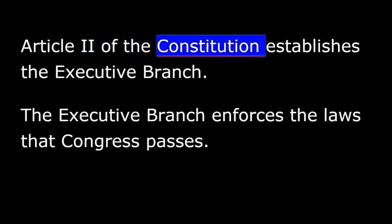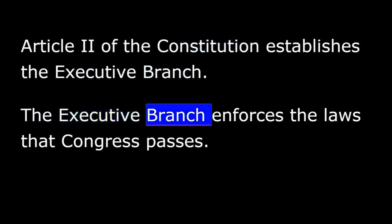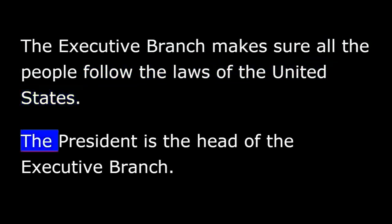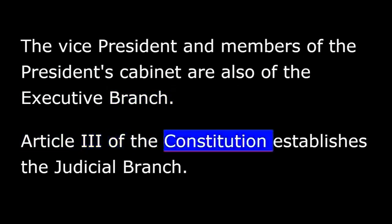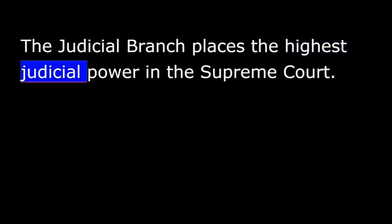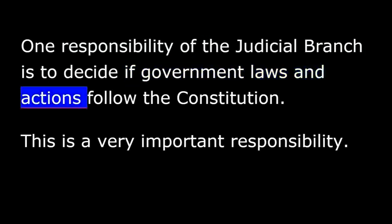Article 2 of the Constitution establishes the executive branch. The executive branch enforces the laws that Congress passes and makes sure all the people follow the laws of the United States. The President is the head of the executive branch. The Vice President and members of the President's cabinet are also part of the executive branch. Article 3 of the Constitution establishes the judicial branch. The judicial branch places the highest judicial power in the Supreme Court. One responsibility of the judicial branch is to decide if government laws and actions follow the Constitution.